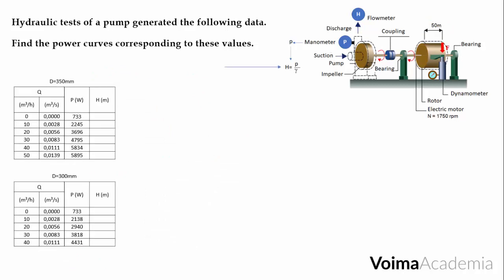In our testing equipment, we have a manometer, so we can measure the head for each flow. Here are the values for the 350 mm impeller. And here are the values for the 300 mm impeller.